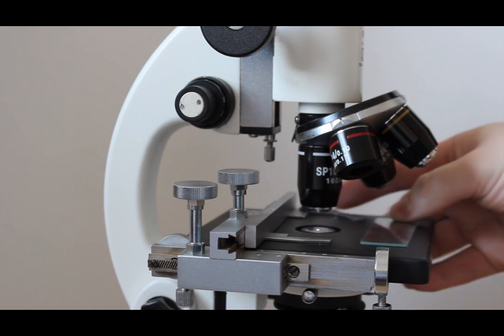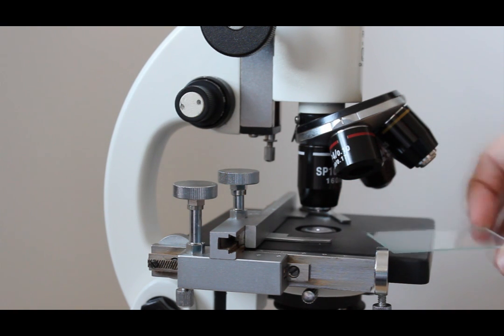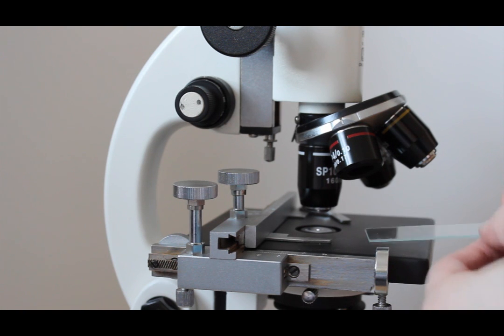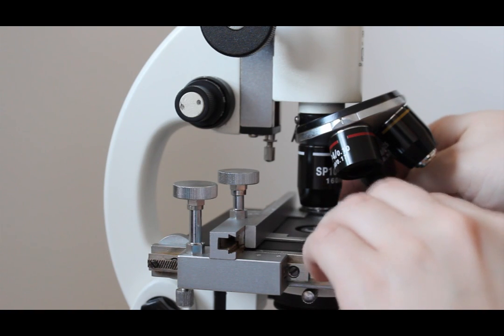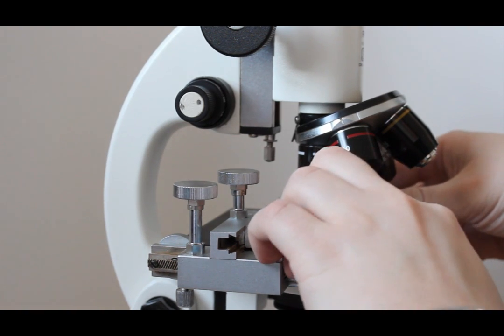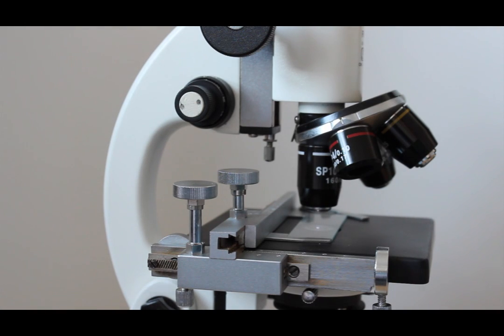So you would take the immersion oil and you would, obviously you'd have a cover stuff on this, but you drop the immersion oil on, one tiny drop, put it back and then you would gently lower it down until the actual objective lens comes in contact with the immersion oil.